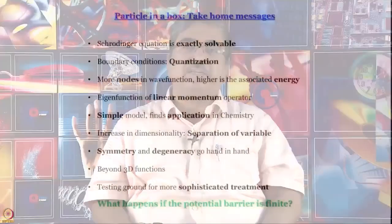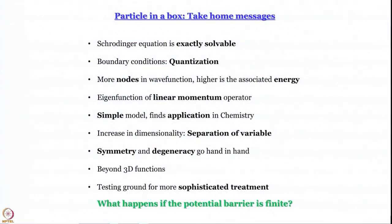When we talked about the three-dimensional box, we understood that we need a four-dimensional function — x, y, z for the dimensions of the box and the dimension of the wave function itself. So how is one supposed to draw it? We have exactly the same problem later when we talk about orbitals. To conclude this part: the particle in a box model has provided a testing ground for more sophisticated treatments we will see later when we talk about approximation methods.